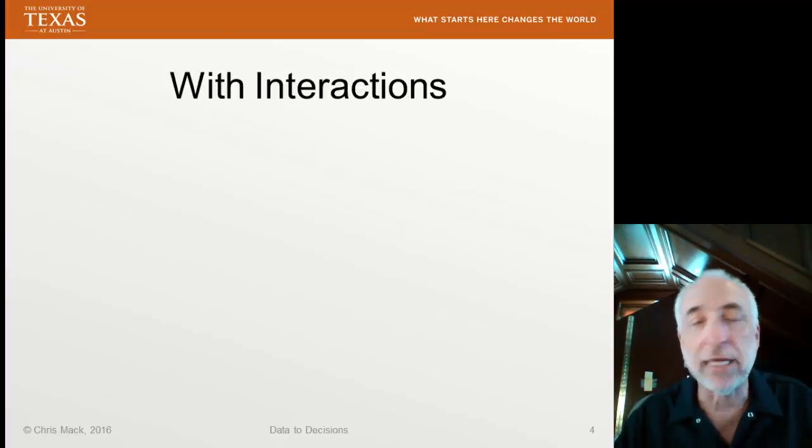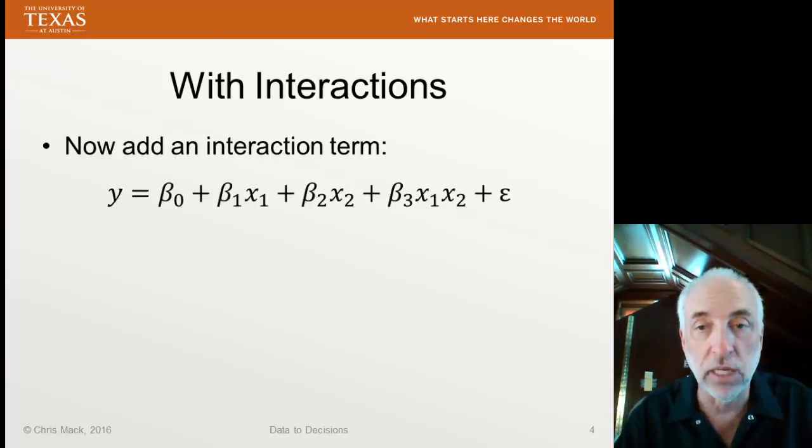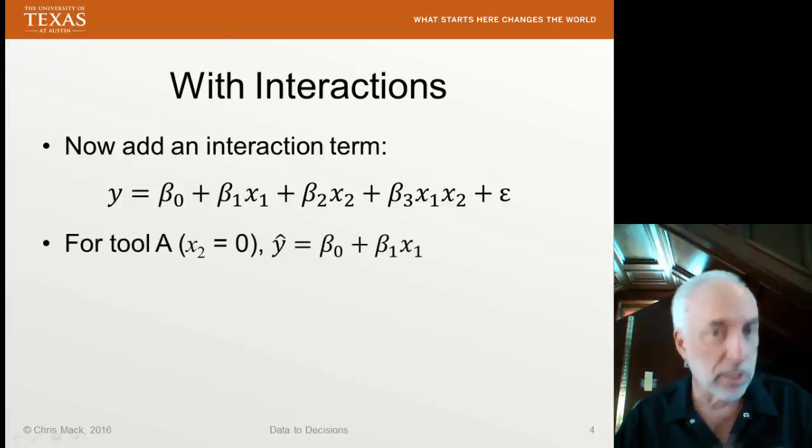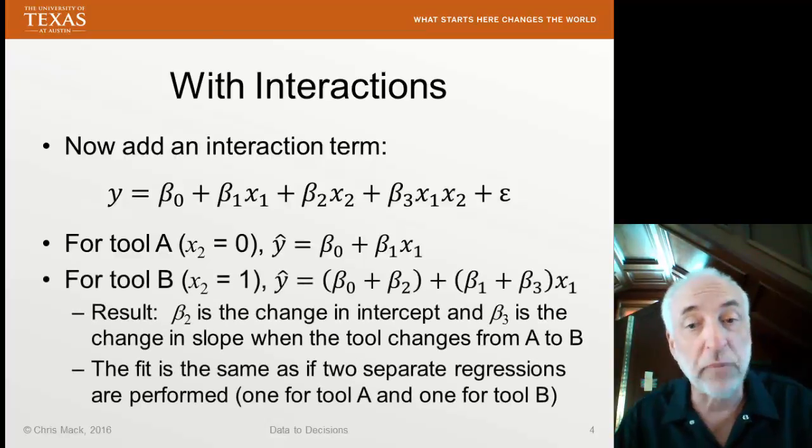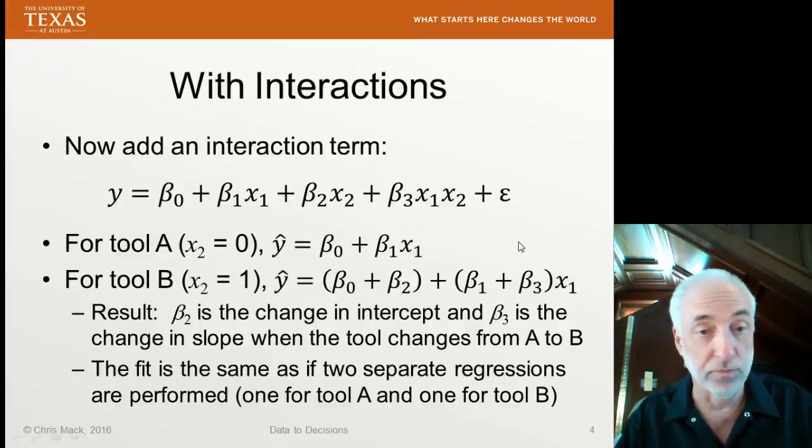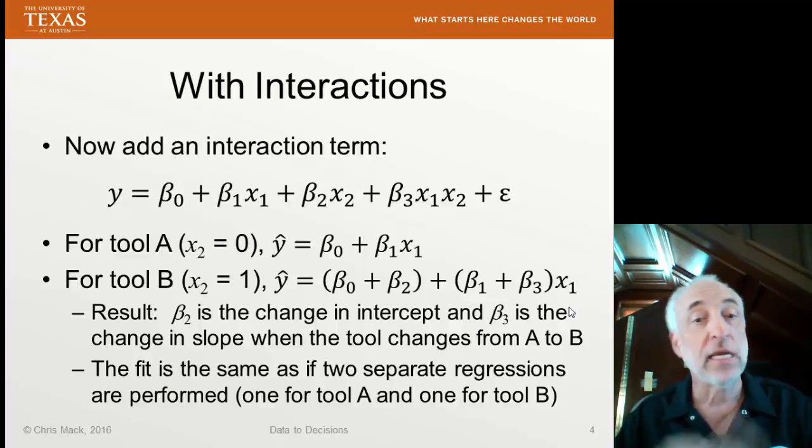Now, suppose I include interactions into this model. I've added an interaction term, X1 times X2. What does that interaction term represent when X2 is an indicator variable? For tool A, I still have β0 plus β1X1. For tool B, now I have a model with a different intercept and a different slope. Therefore, β2 tells me the change in intercept when going from tool A to tool B, and β3 tells me the change in slope when going from tool A to tool B.